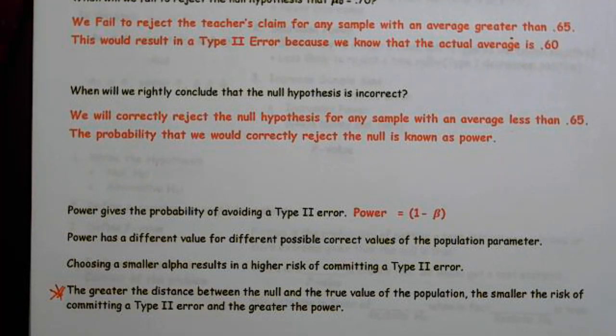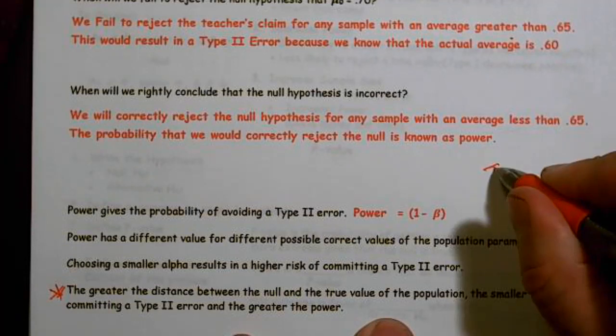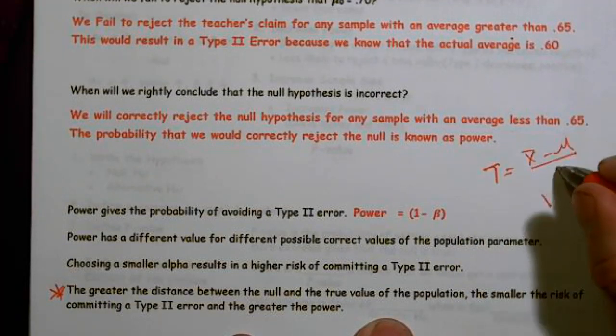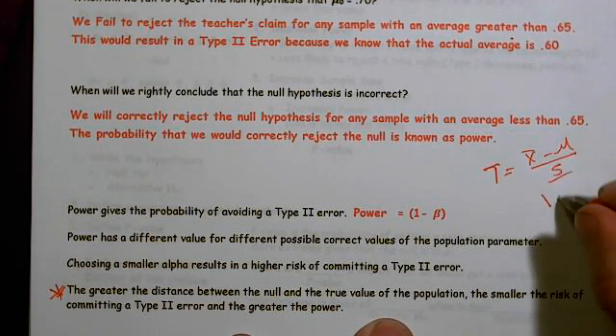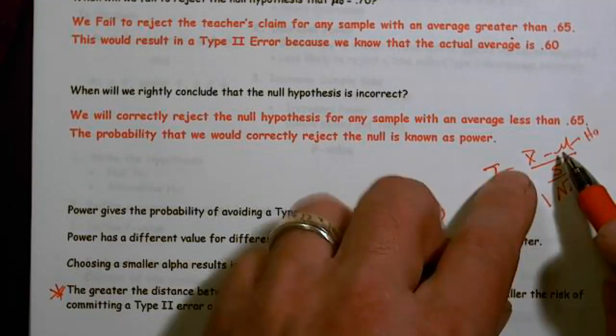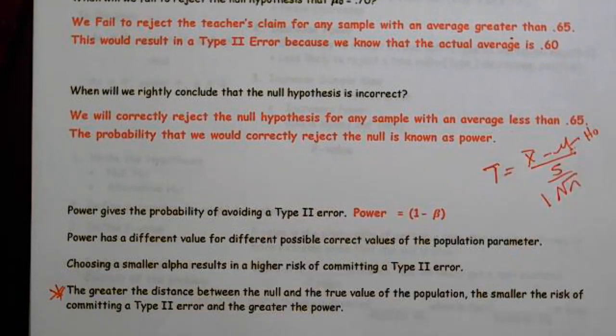The smaller the distance between the null and the true value of the population, the smaller the risk of committing a type 2 error. In other words, if we look at our formula T equals X bar minus mu over S divided by the square root of N, this is our claimed null. And as this distance gets bigger, it's easier to reject. And as it's easier to reject, the probability of a type 2 error goes down.